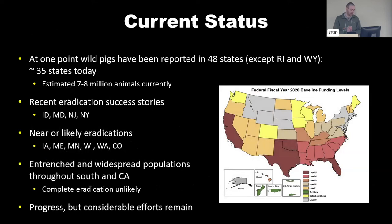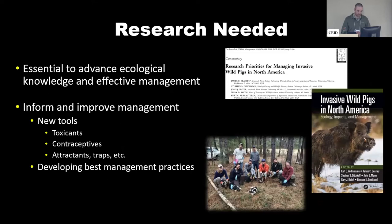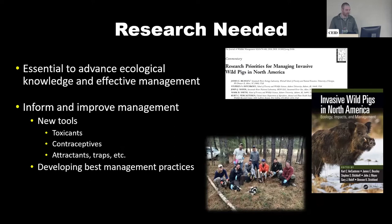Where are we today in the United States with management of wild pigs? At one point they've been reported in as many as 48 states, with about 35 having some population today and an estimated seven to eight million animals. There have been some eradication successes, but around the Southeast and California, wild pigs are widespread and doing very well. Research is needed not only to improve current management techniques — toxicants and contraceptives have only been around for the past half-decade or so — but also to develop new management techniques.